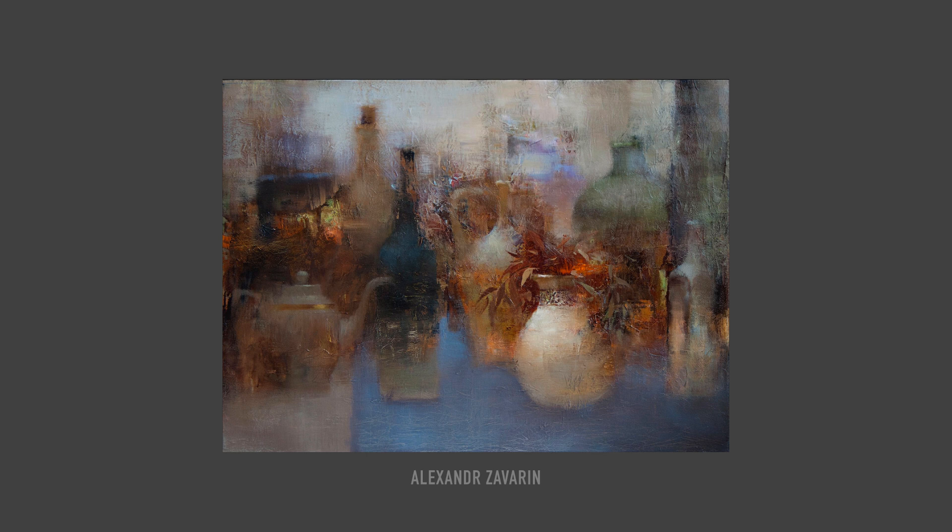In real life, colors in photographs, paintings, and movies rarely change in just one component. More often than not, they vary infinitely in all components at once, resulting in a complex, rich, and enjoyable color composition.